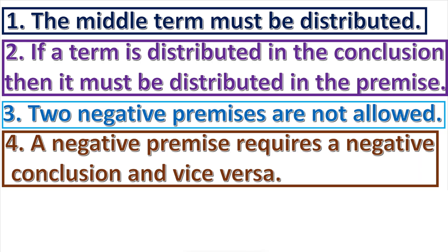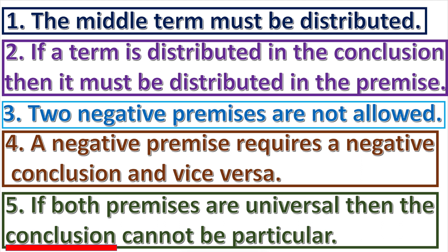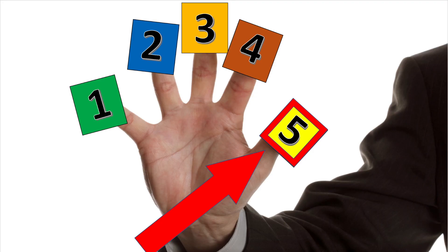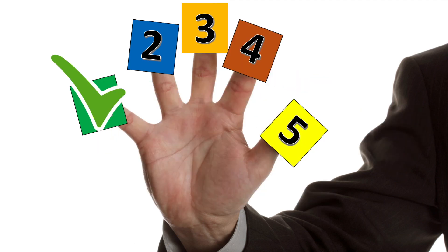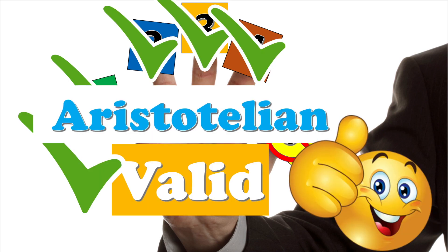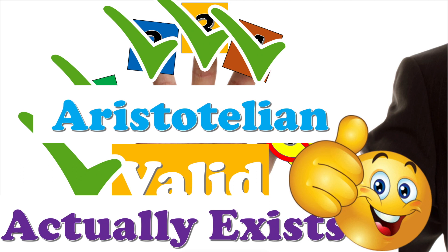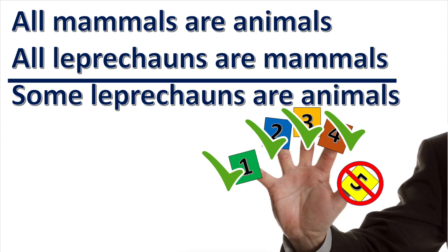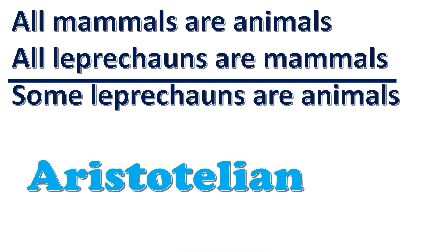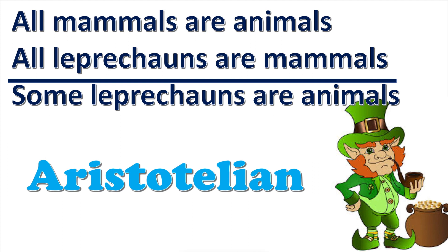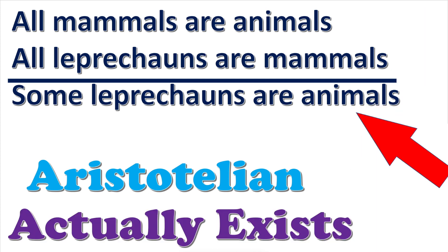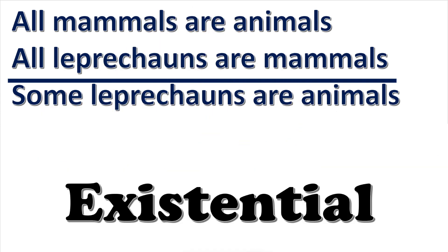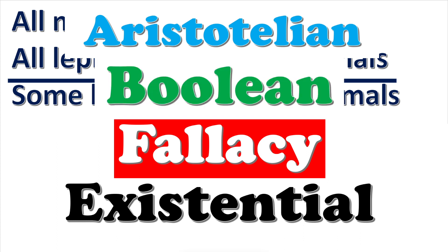Rule five says that if both premises are universal, then the conclusion cannot be particular. If rule five is broken, the existential fallacy is committed from the Boolean standpoint. A syllogism that breaks only rule five is valid from the Aristotelian standpoint. In the leprechauns example, the premises are universal and the conclusion is particular — rule five is broken. Since leprechauns do not exist, the syllogism commits the existential fallacy from both the Aristotelian and Boolean standpoints.